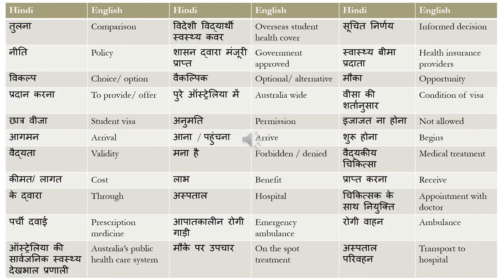This context comes in relation to universities or courses approved by the government — you can say 'shasana' for government. The next word is 'swastya bima pradata,' which means health insurance provider: 'swastya' means health, 'bima' is insurance, and 'pradata' is provider. 'Vikalp' means choice or option — for example, 'aapke paas char vikalp hai' means you have four choices. 'Vikalpik' means optional or alternative.